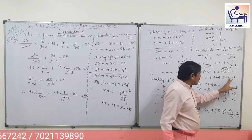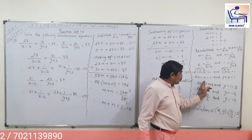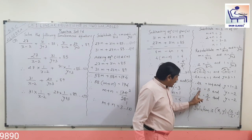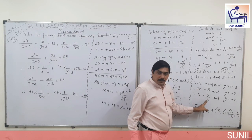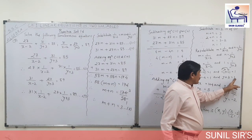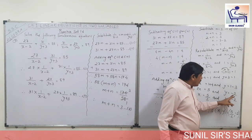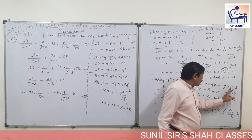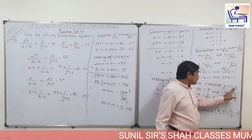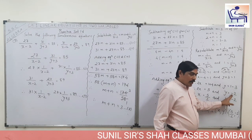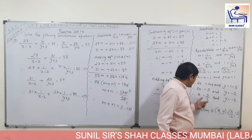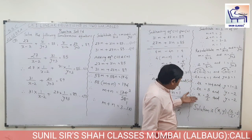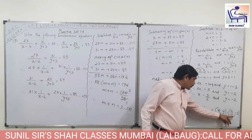Cross multiplying: 2 into (x minus 2) is equal to 1. So 2x minus 4 is equal to 1, and minus 4 goes to the other side as plus 4, so 2x is equal to 5, so x is equal to 5 upon 2. Similarly, y plus 3 is equal to 1, so y is equal to 1 minus 3 is minus 2. We got this value and we repeat. Solution: x is equal to 5 upon 2 and y is equal to minus 2.